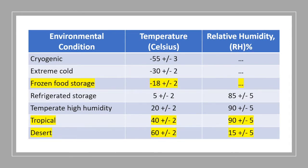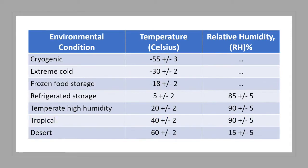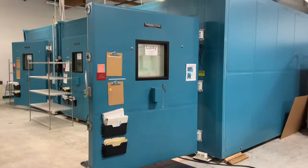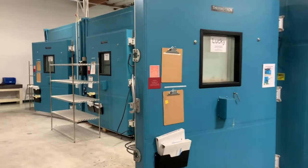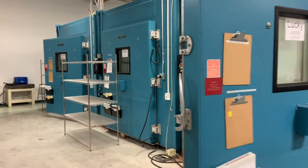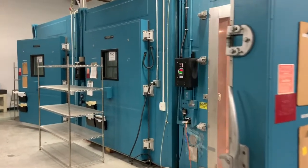There are seven conditions listed in D4332 and the recommended duration is about 72 hours, which would subject the packaging to a hot and humid environment.